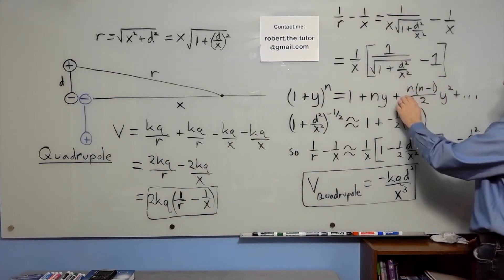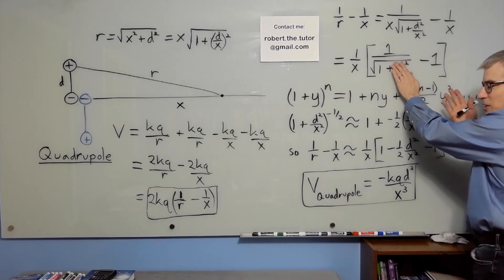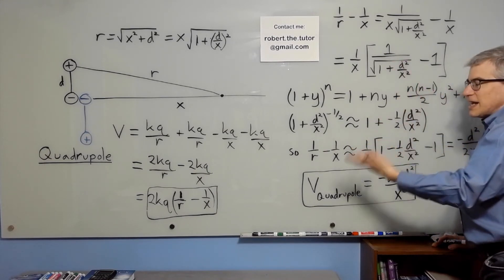Now if d is super tiny, then that would vanish and we get zero. And that's the problem. That's too rough. We want to get an actual approximation.